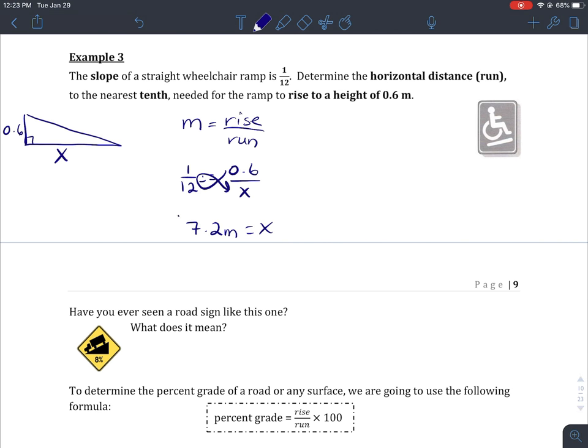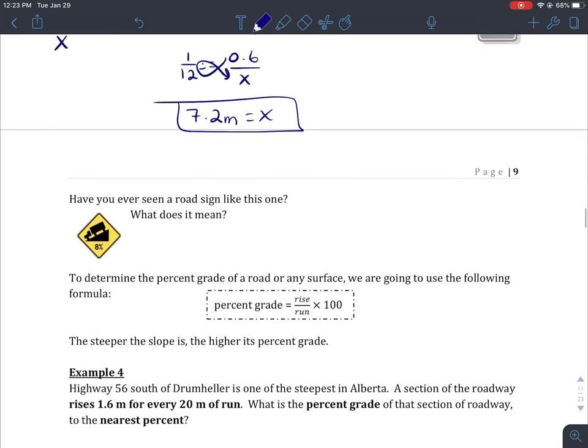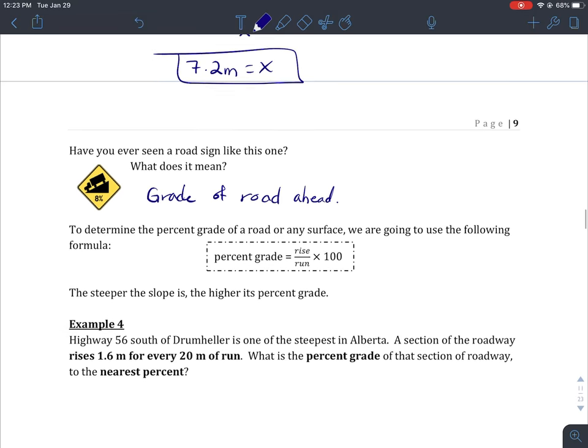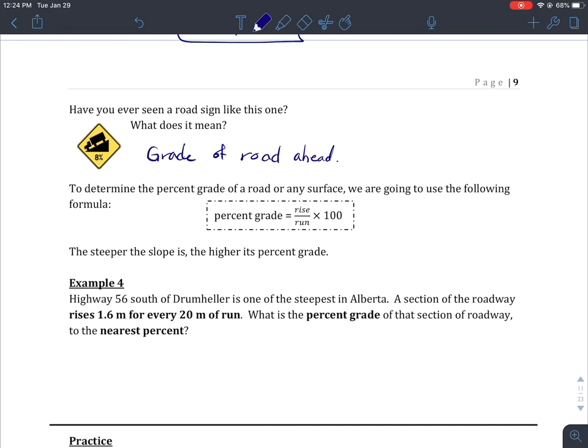The sign below has a truck on an incline - this is the grade of the road ahead. It tells you how steep the hill is you're about to drive on. To determine the percent grade of a road or any surface, we use the formula: percent grade = (rise/run) × 100. The steeper the slope is, the higher the percent grade. If this is a 100 percent grade, it's going to be very, very steep - one of the steepest things we can deal with.